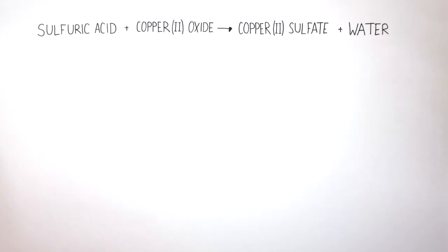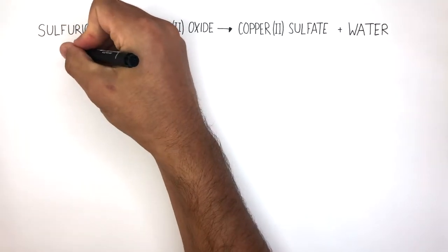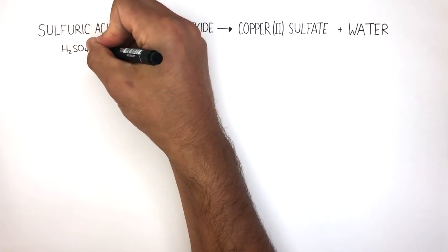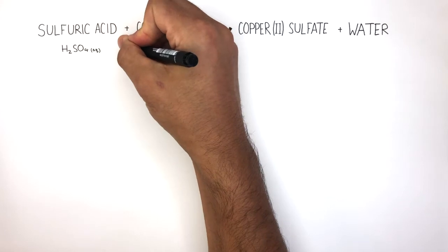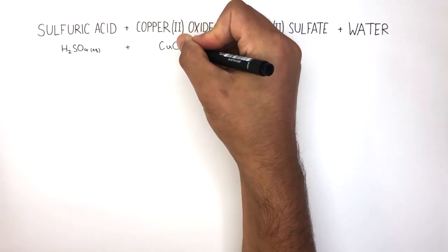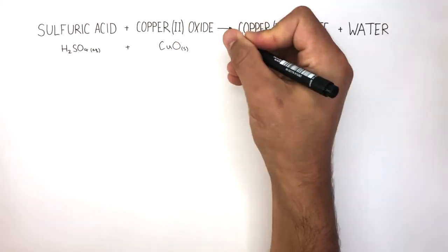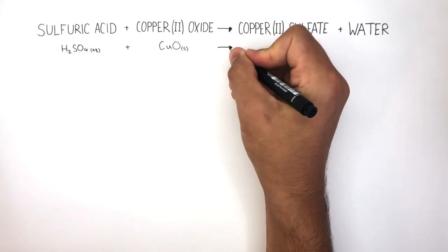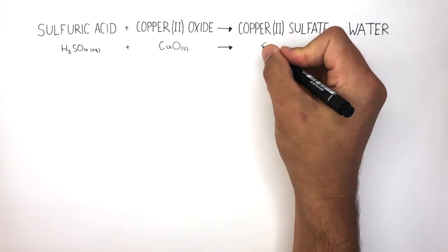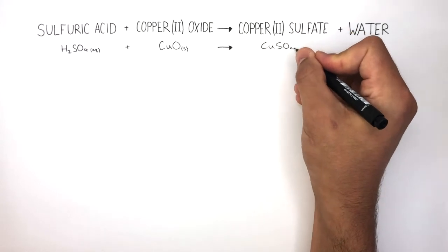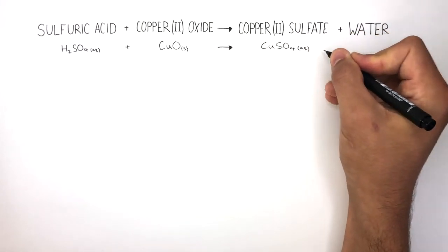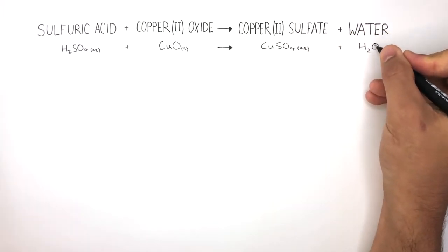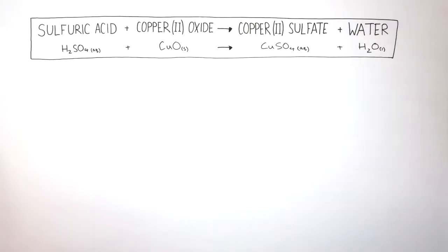The balanced symbol equation is H₂SO₄ (aq) plus CuO (s), reacts to form CuSO₄ (aq) and H₂O (l).